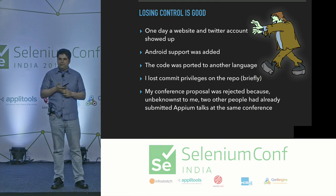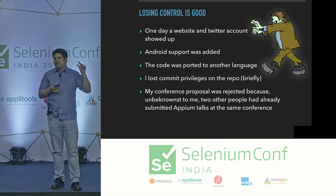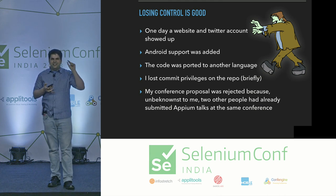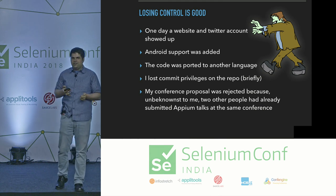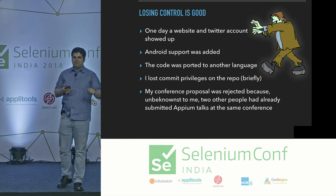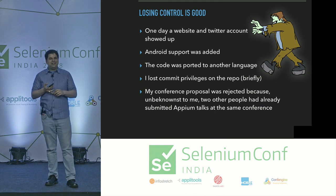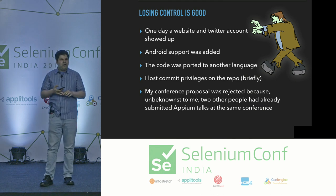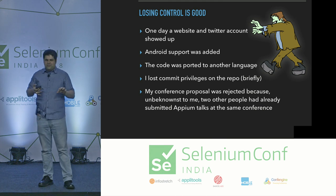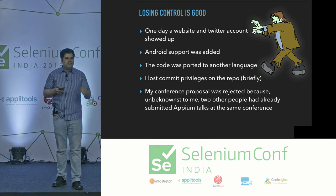At one point I lost the commit bit to the repo — back then GitHub had either admin or not admin privileges, and someone made admin didn't know who I was and deleted me. I've got it back now. I also had a conference proposal rejected for a perfect-seeming conference in a tropical location. I emailed them saying this is perfect for your conference, can you reconsider? They said they'd already accepted two other Appium talks. And I was like — I didn't know Appium had two other users. That's really cool.